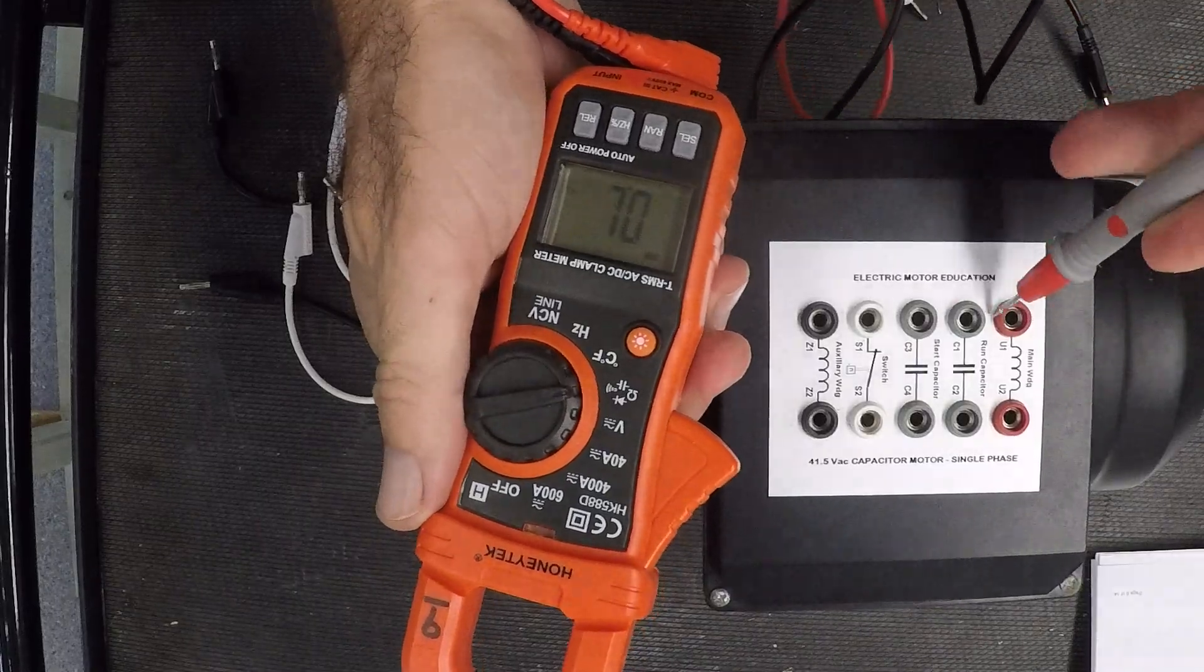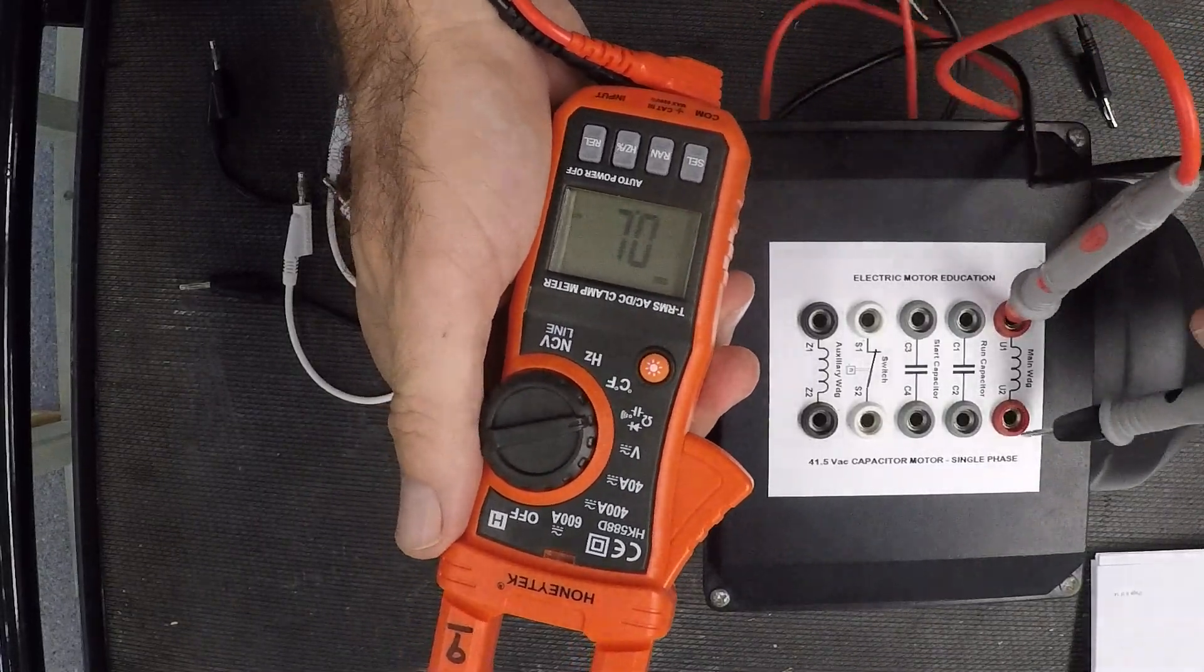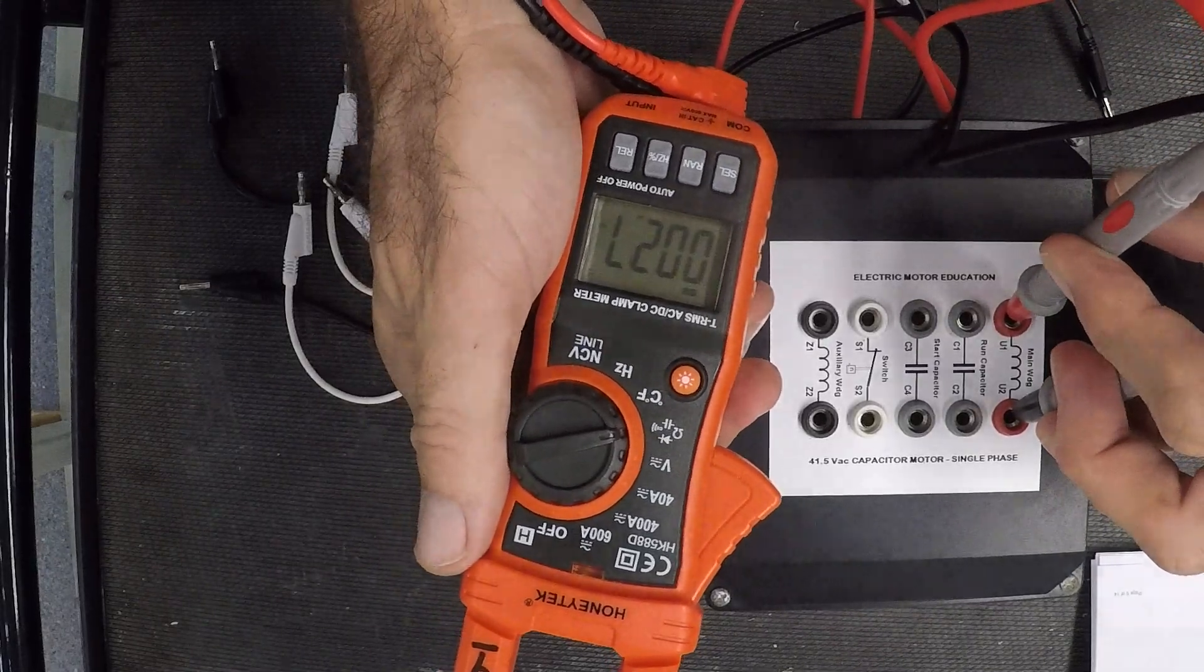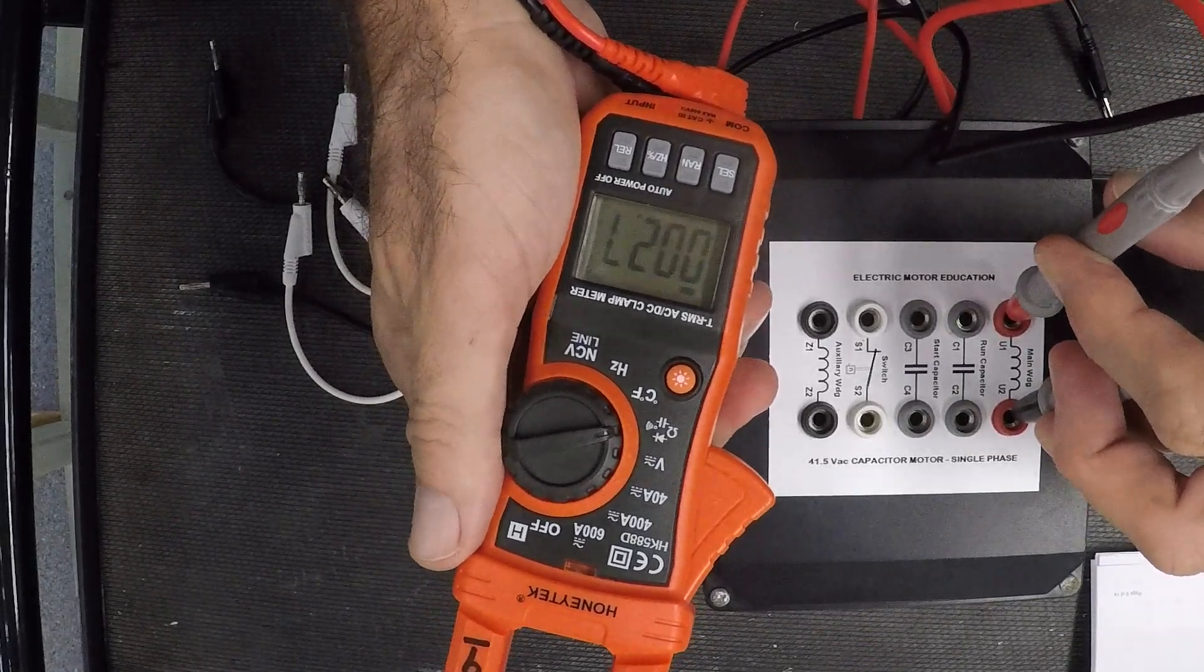First things first, I want to check my run winding. Let's see what the reading is there. I'm getting 2.7 ohms, which is good.